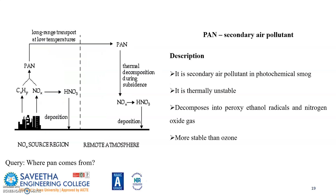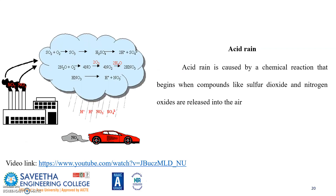Smog is one of the major secondary pollutants. It is thermally highly unstable and decomposes into peroxy ethylene radicals and nitrogen oxide gas. It is more stable than ozone.